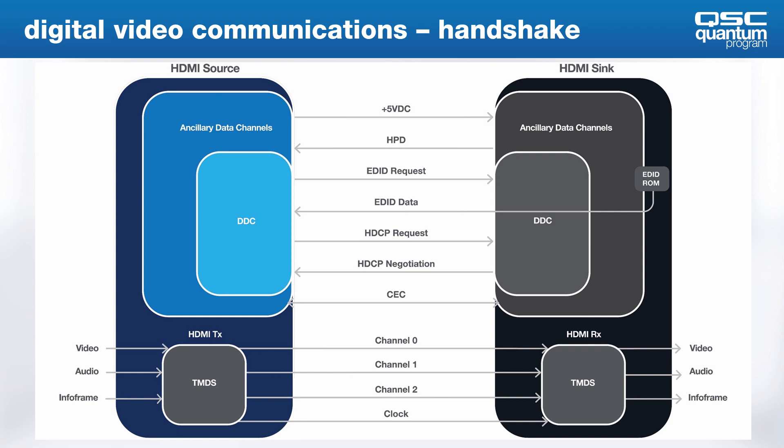You often hear about hot plugging a source or a sync, which means removing and reseating the HDMI cable and basically restarting the whole HDMI handshake process. Once the source receives its HPD, it will then request the EDID, and then the sync will respond with the EDID data.